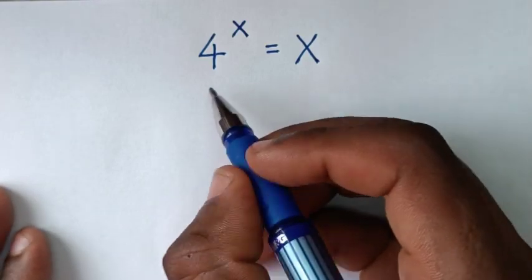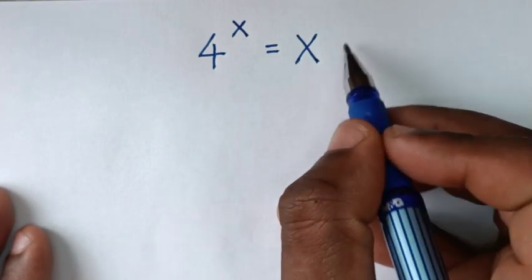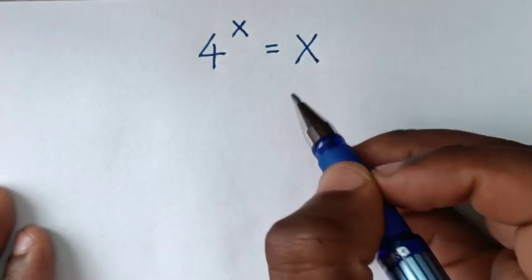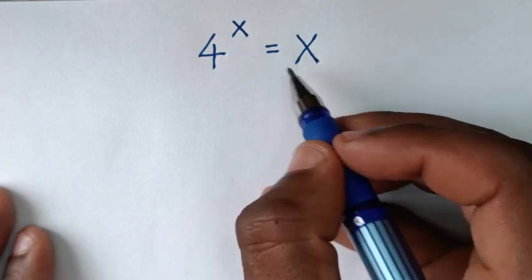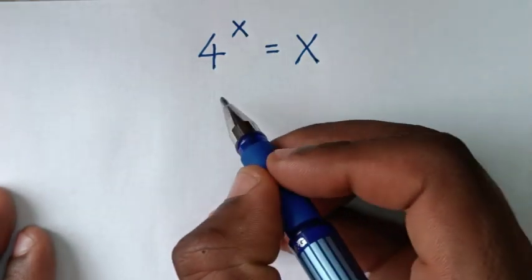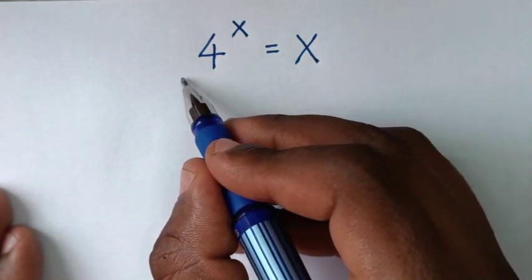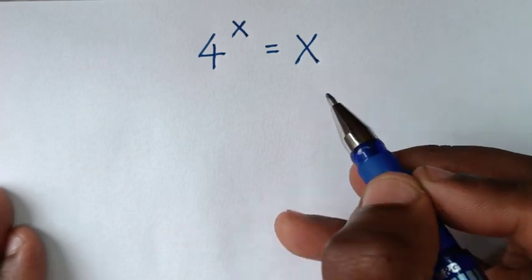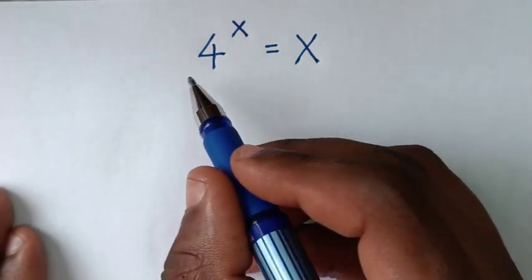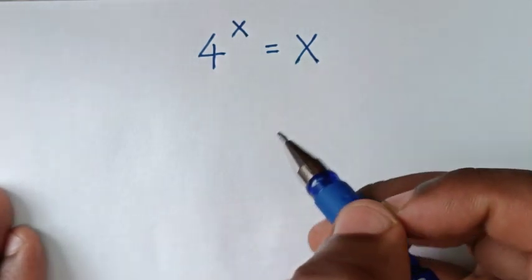Hello, you are welcome to solve this math problem which is 4 to the power of x is equal to x. To find the value of x from this equation, in the first step we'll apply ln on both sides.